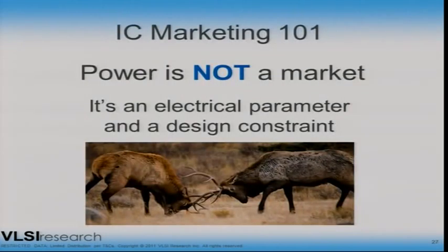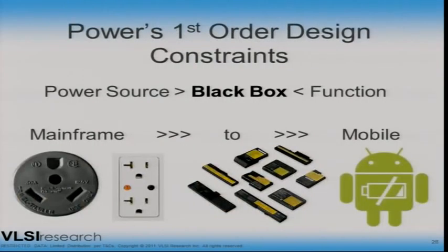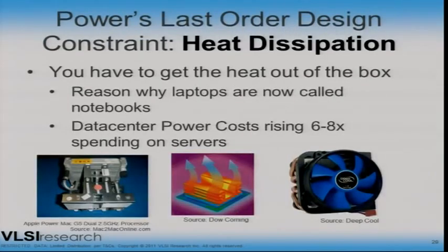Let's switch to marketing — how do you market power? Marketing 101: power is not a market. Don't make this mistake. You can't sell power. It's an electrical parameter and a design constraint. If you look at power as a first-order design constraint, you start off with where are you getting your power from — that tells you how you're going to design your IC, what kind of function you need, what your power source is, and then you've got to design to optimize around whatever your source is. The last-order design constraint is heat dissipation.